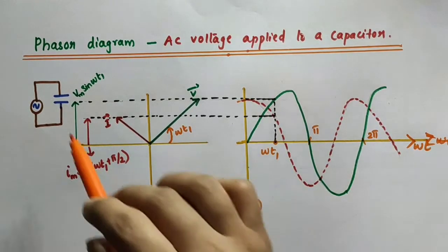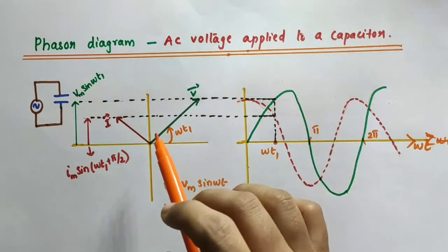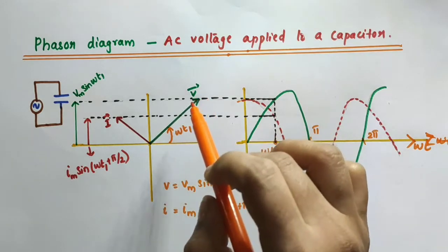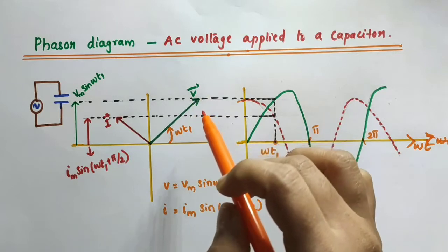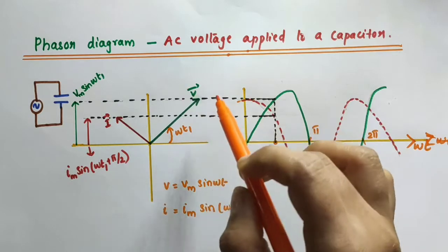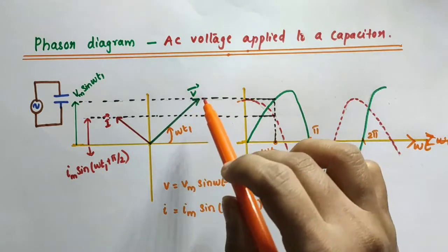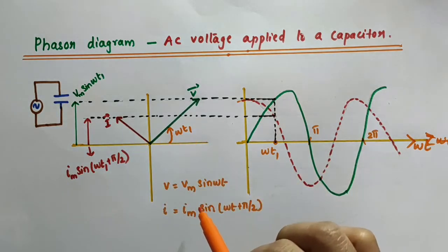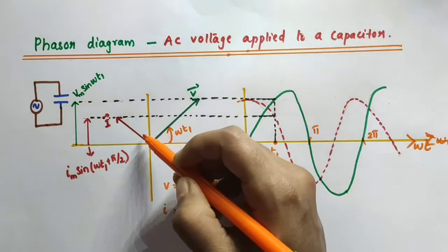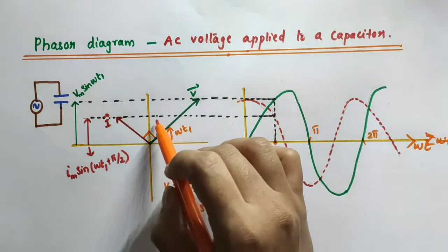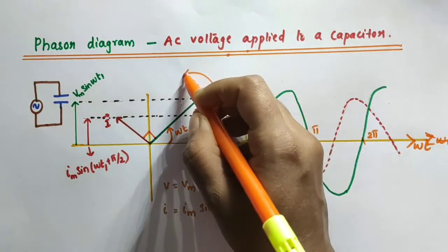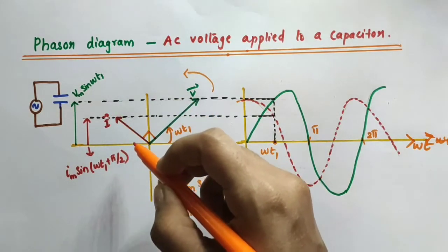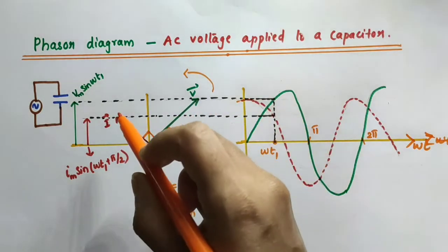Let us discuss the phasor diagram for this purely capacitive circuit. This is the phasor diagram at an instant of time t1. The vector V is the voltage phasor — voltage is a scalar quantity, but in phasor analysis it is treated as a rotating vector. At time t1, the voltage phasor corresponds to angle ωt1. The current phasor is π/2 ahead of the voltage phasor, since phasors rotate in the anti-clockwise direction. So current has already reached ahead while voltage is still at ωt1 — current leads voltage by π/2.